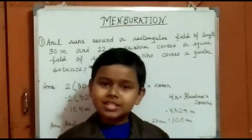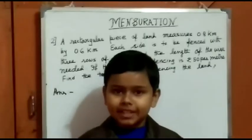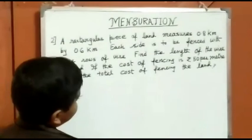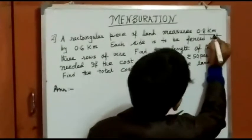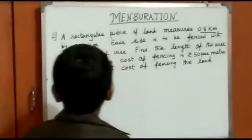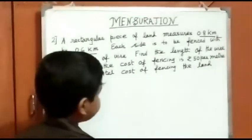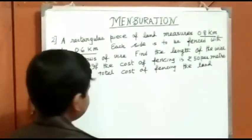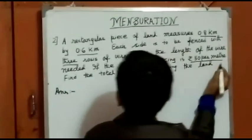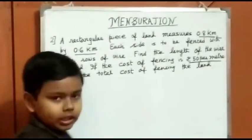Now let's move to the second question. The second question is: A rectangular piece of land measures 0.8 km by 0.6 km. Each side is to be fenced with 3 rows of wire. Find the length of the wire needed. If the cost of fencing is Rs 50 per meter, so find the total cost.